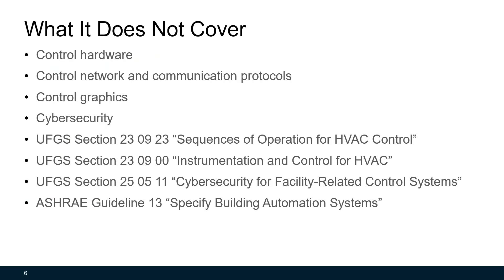Guideline 36 only contains control sequences, not full control system specifications. It won't cover control hardware specification, control network and communication protocols requirements, and it does not have requirements for control graphics or cybersecurity. For DOD managers, you can reference Unified Facility Guide Specifications Section 23923, Section 23900, or Section 25511 for cybersecurity for facility-related control systems. For others, ASHRAE Guideline 13 on building automation systems has good information.